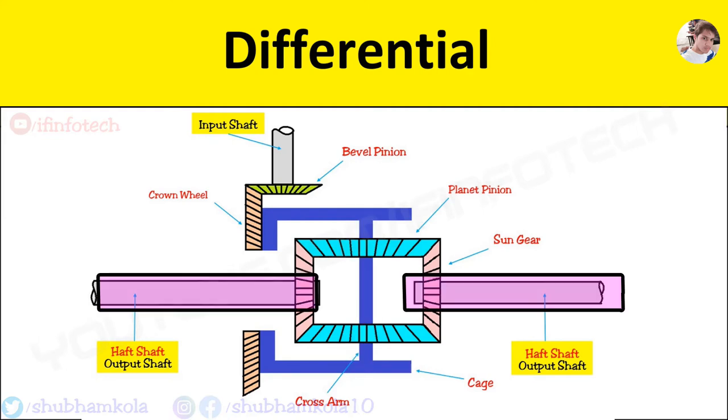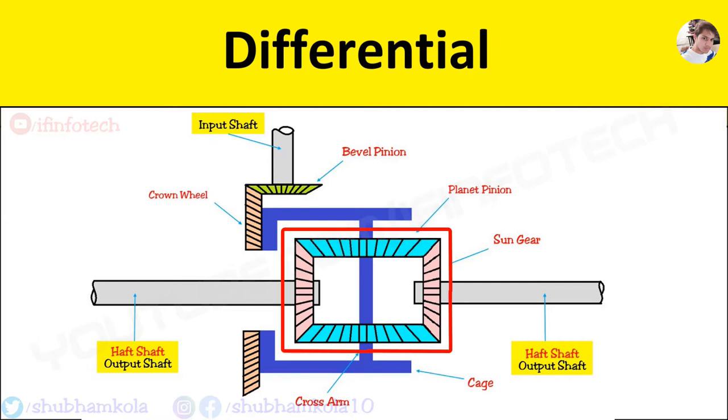Road wheels are driven by two half-axle shafts. Side gear or sun gear are splined and mounted on inner end of each half-axle shaft. Sun bevel gear and planet bevel gear are meshed with each other at right angle.